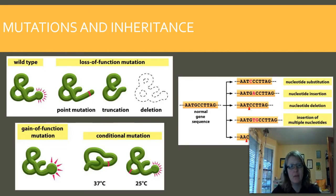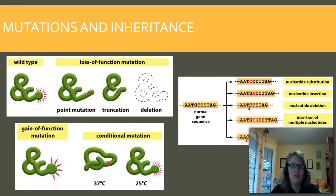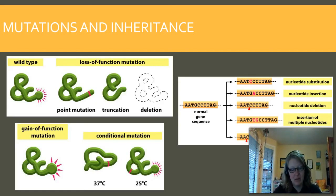This is the end of our quick topic on genetics. I expect you already have a lot of Mendel history and genetics background. We're not going to go into Punnett squares in this class, but I want you to understand how meiosis works with Mendel's laws. I'll see you in topic three, where we talk about how we use all of this in the laboratory.